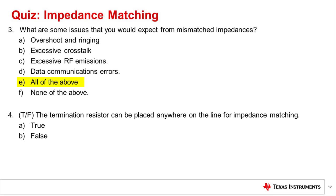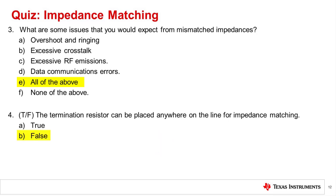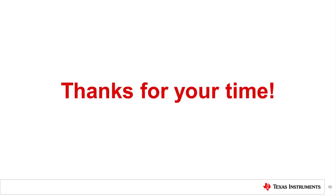Question 4: True or false — the termination resistance can be placed anywhere on the line for impedance matching. The correct answer is B, false. The termination resistor needs to be placed near the driving gate. That's all for today's video. Thanks for watching.